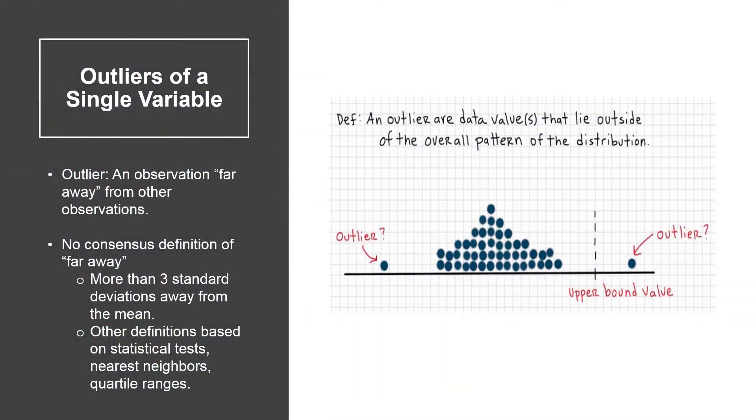For a single variable, an outlier is an observation far away from other observations. Obviously, far away is a relative term, and there is no consensus definition for outliers.